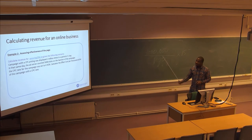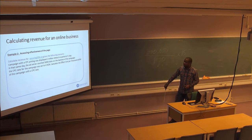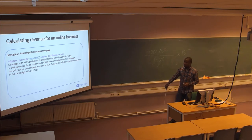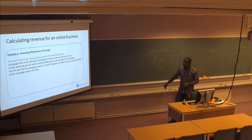There's also a slightly different scenario: a campaign with cost-per-click pricing was displayed 2 million times in one day, and the ad server counted 5,000 clicks on the banners. The CPC rate was 4 Norwegian crowns. The task is to calculate the effective cost per thousand (eCPM) of this campaign.